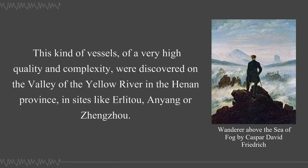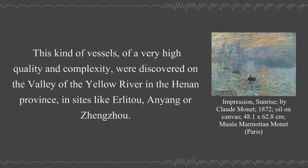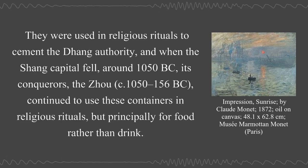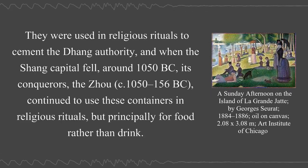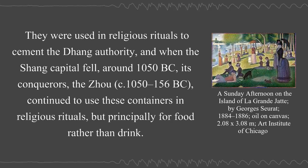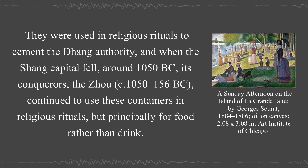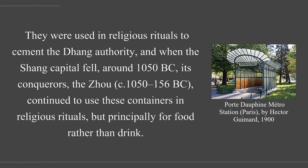These vessels of very high quality and complexity were discovered in the valley of the Yellow River in Henan province, in sites like Erlitou, Anyang, or Zhengzhou. They were used in religious rituals to cement dynastic authority, and when the Shang capital fell around 1050 BCE, its conquerors, the Zhou circa 1050–256 BCE, continued to use these containers in religious rituals, but principally for food rather than drink.